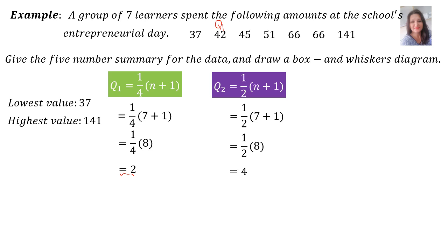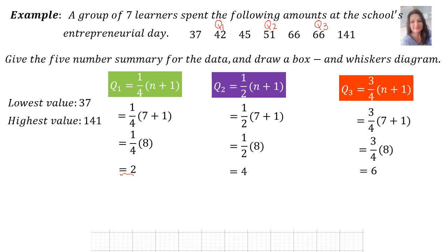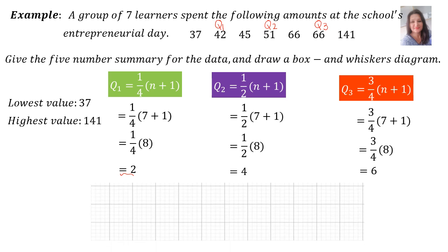Q2, the median, is 51. For Q3, the formula is three quarters of (n + 1), which is three quarters of (7 + 1) = three quarters of 8 = 6. Therefore the value in the sixth position is Q3, which is 66. Now we can sketch the box and whiskers diagram — remember it is a very accurate diagram, so we use graph paper.